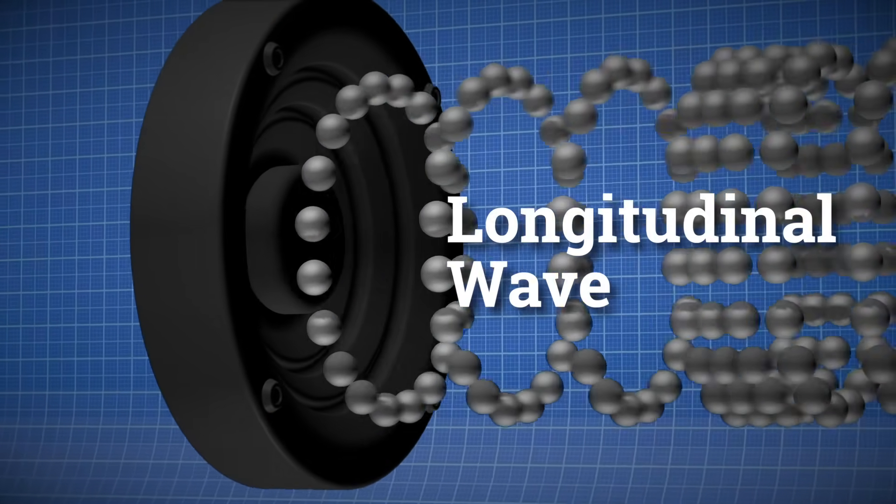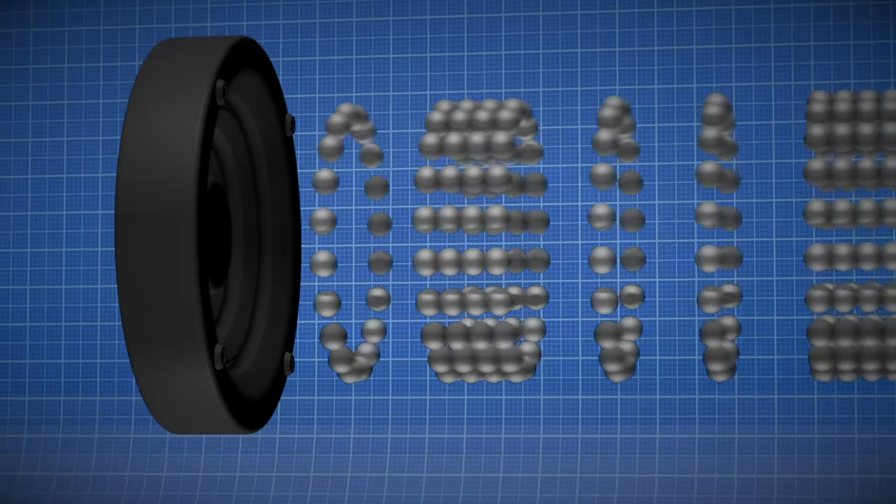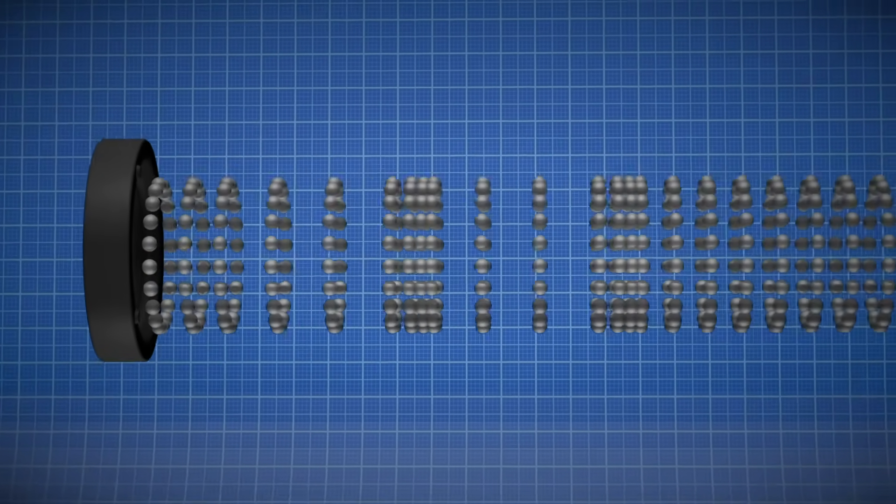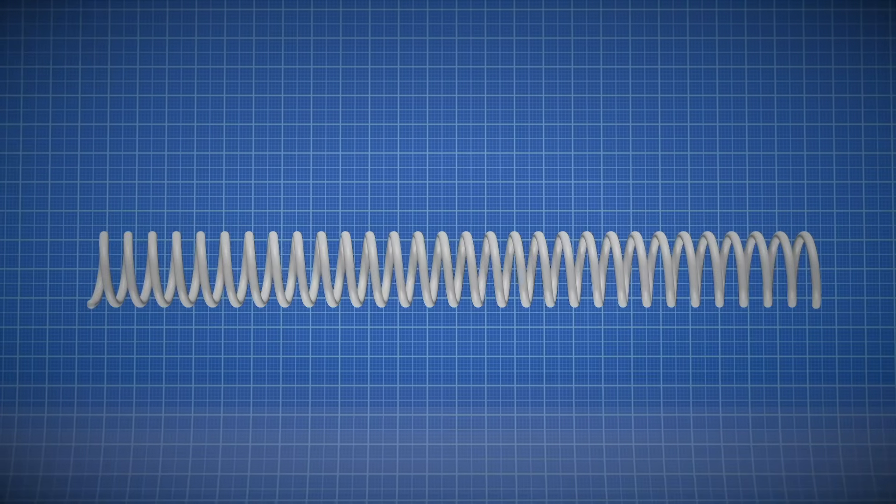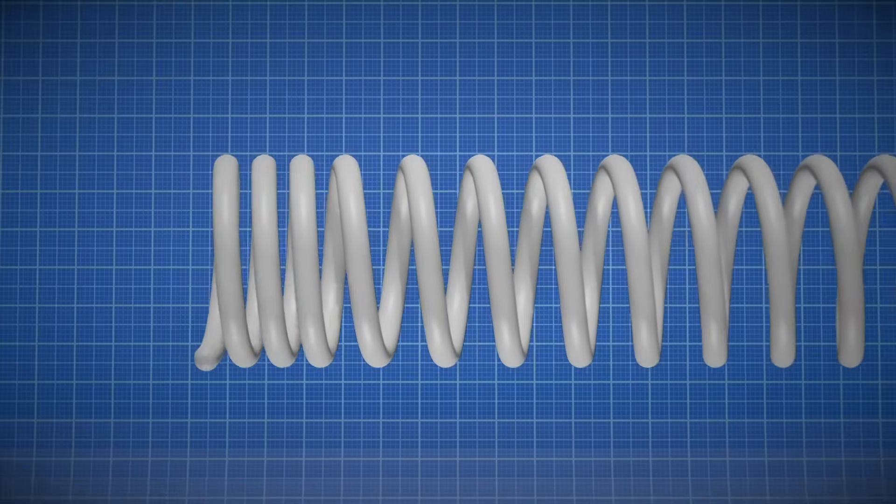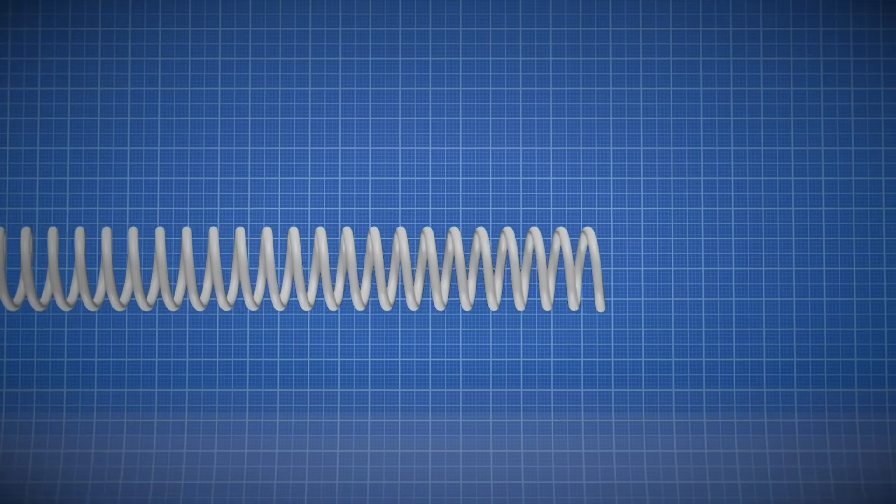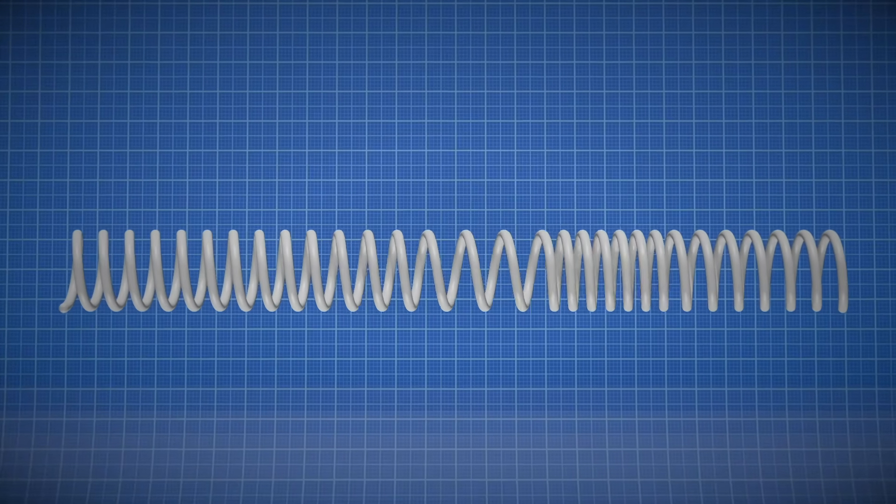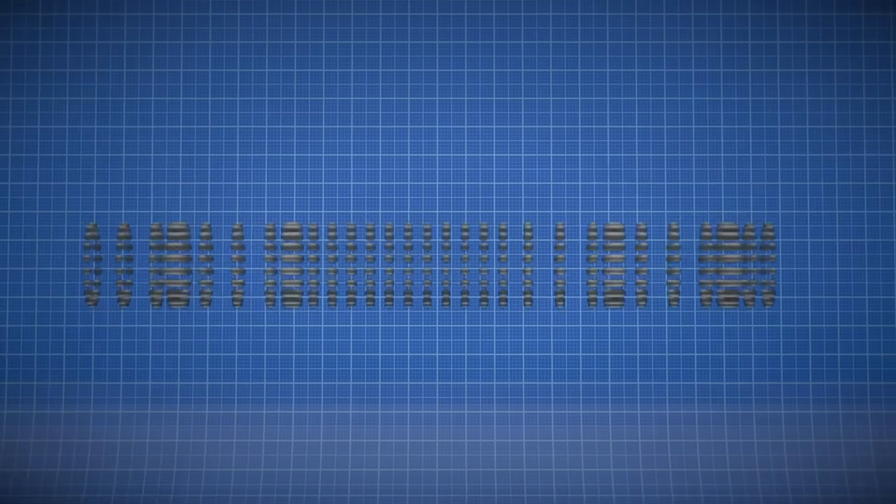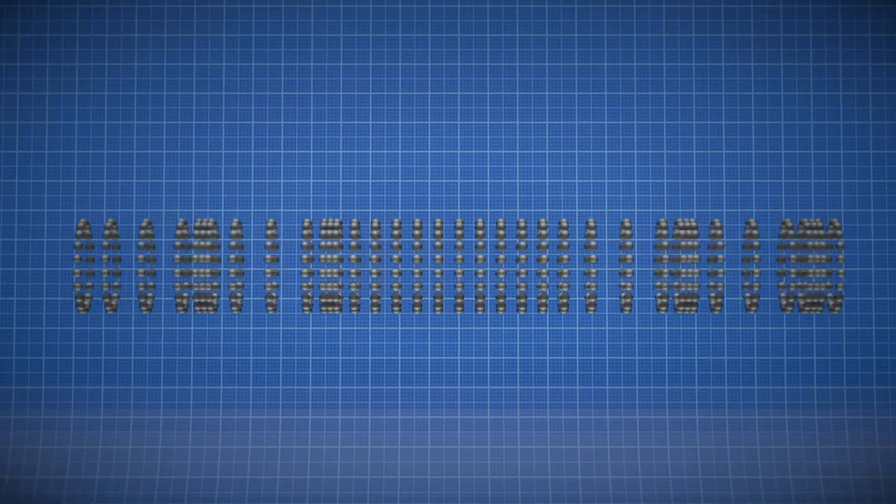Sound travels as a longitudinal wave, which just means the vibrations happen in the same direction the wave is going. A simple way to picture this is with a spring. If you squeeze a few coils together at one end and let go, you'll see a compression pulse move down the spring. That's pretty much what sound does, only instead of metal coils, it's vibrating particles in a fluid.